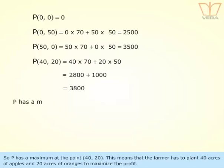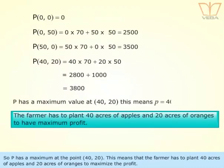So P has a maximum at the point (40, 20). This means the farmer has to plant 40 acres of apples and 20 acres of oranges to maximize the profit.